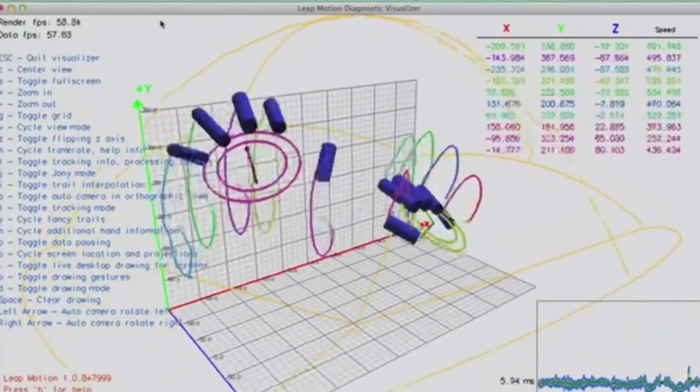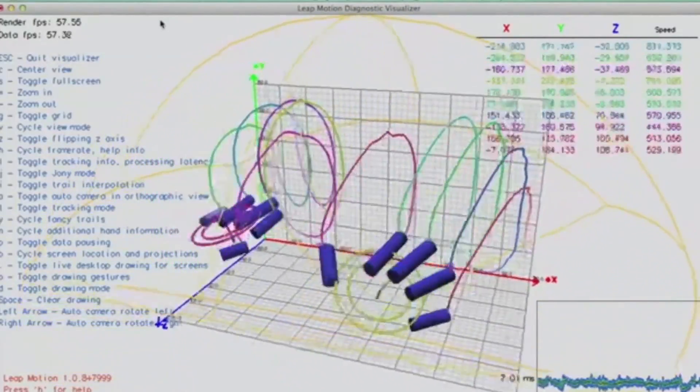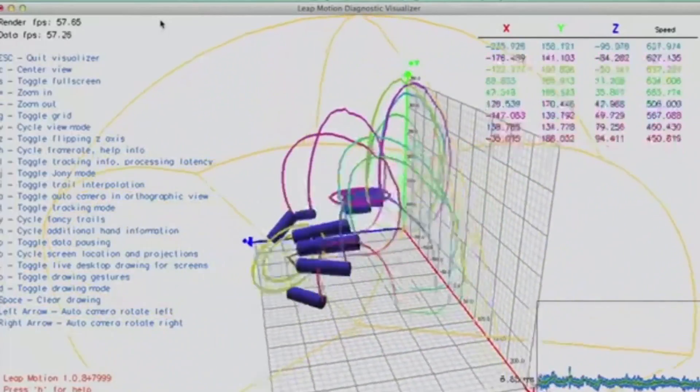We use the Leap Motion Controller to enable touch-free interactions with our viewer. Think of the Leap as a Kinect but only for your hands. This small device can accurately track your hand movement and finger positions in three-dimensional space in its field of view.